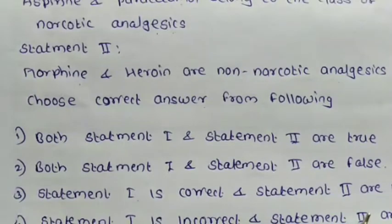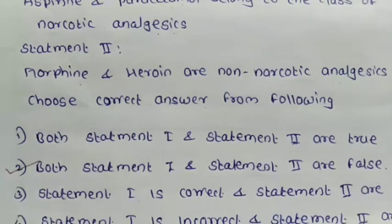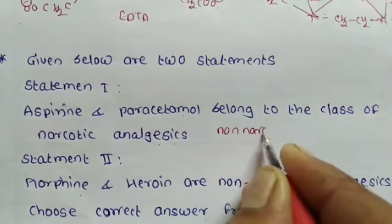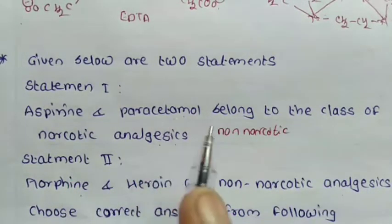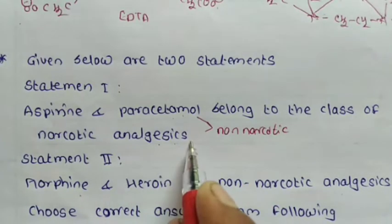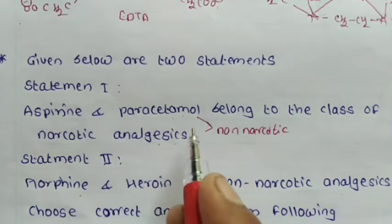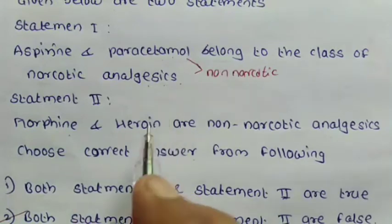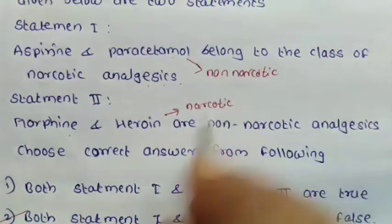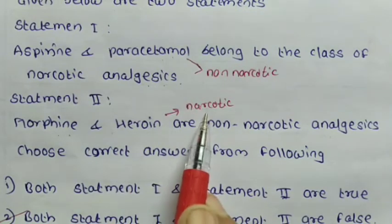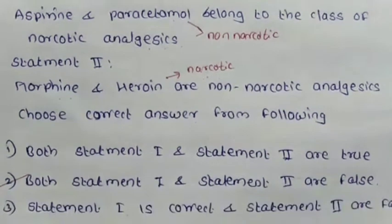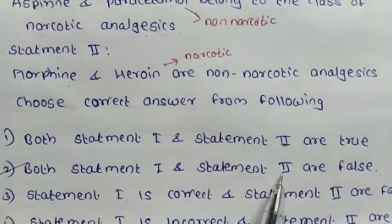The correct option is (2): both statements are false. Aspirin and paracetamol belong to the class of non-narcotic analgesics — they do not produce depression of the central nervous system. But morphine and heroin belong to the class of narcotic analgesics, and they do produce depression of the central nervous system. Therefore, both statement 1 and statement 2 are false.